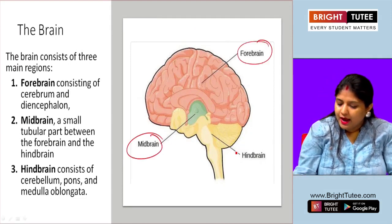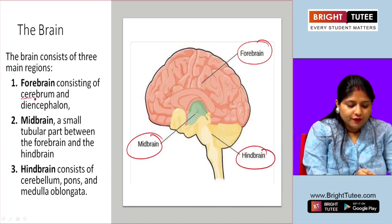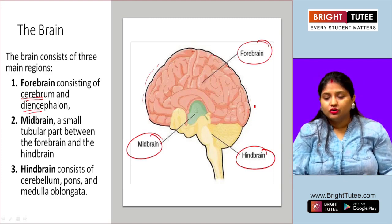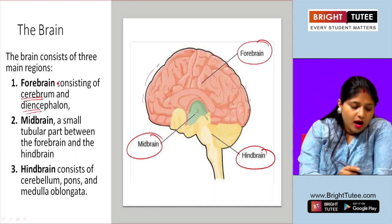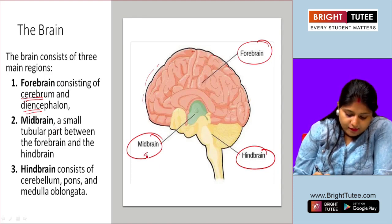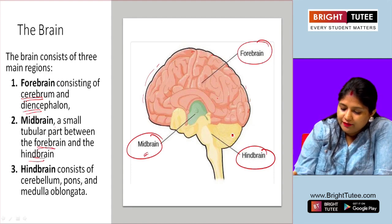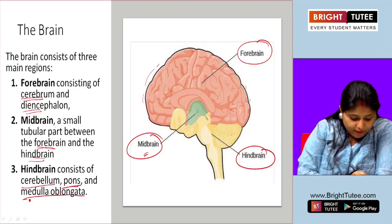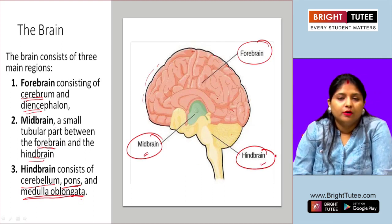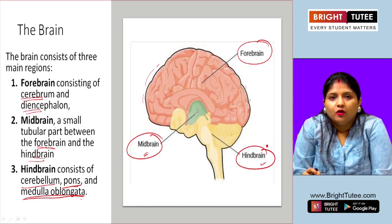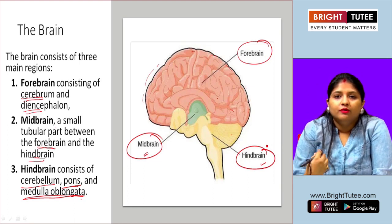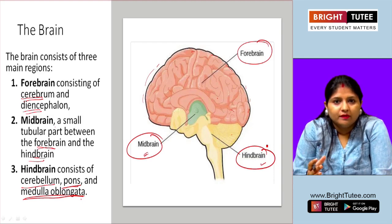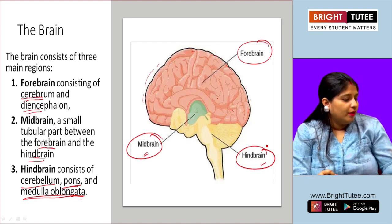The brain consists of three main regions: the forebrain, the midbrain, and the hindbrain. The forebrain consists of the cerebrum and diencephalon. The midbrain is a small tubular part between the forebrain and the hindbrain. The hindbrain consists of the cerebellum, pons, and medulla oblongata. The cerebellum is a crucial part — important for maintaining posture and how a person walks.